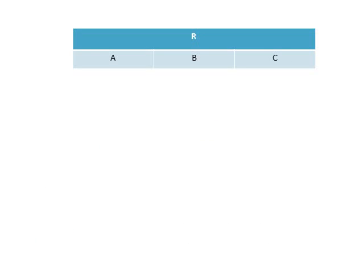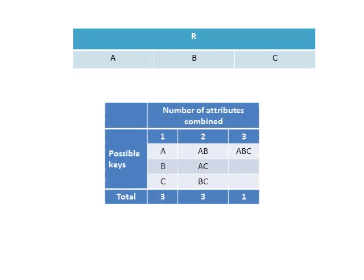Let's go back to our relation R. If you want to pick a key with only one attribute, you have three choices: A, B, or C. If your key needs two attributes, you again have three choices: AB, AC, BC. And finally, if you need all three attributes, you are left with only one choice: ABC. So from only three attributes, you have a total of seven possible combinations for a key.